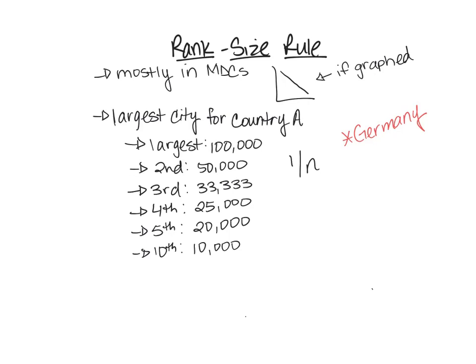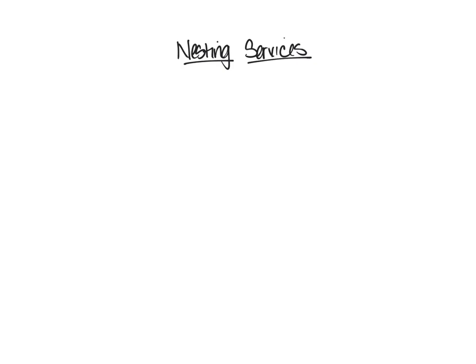If you could choose, rank size rule is better for a country. With rank size rule, resources, infrastructure, and services are distributed more evenly — your city is guaranteed some funding from the government. Your service hexagons stay manageable in size rather than one city gobbling up everything, which is why rank size rule is preferable to being a primate city country.